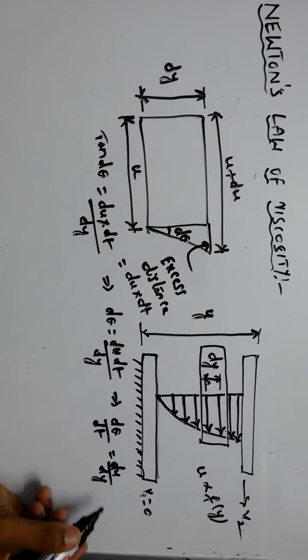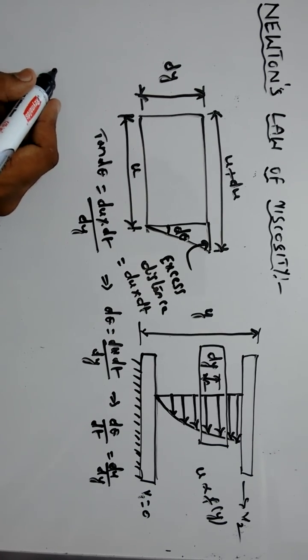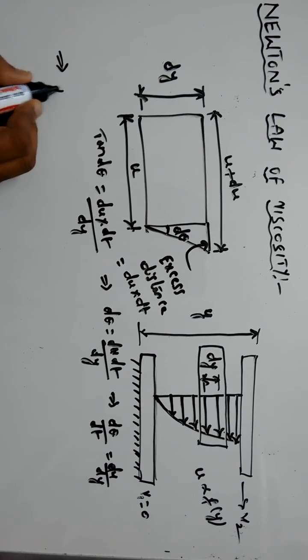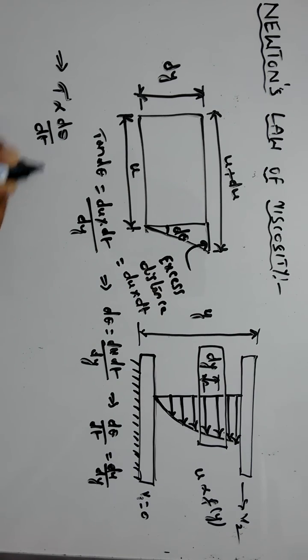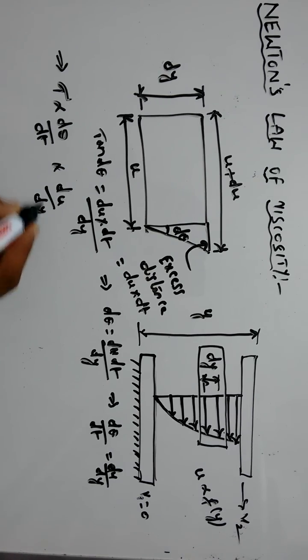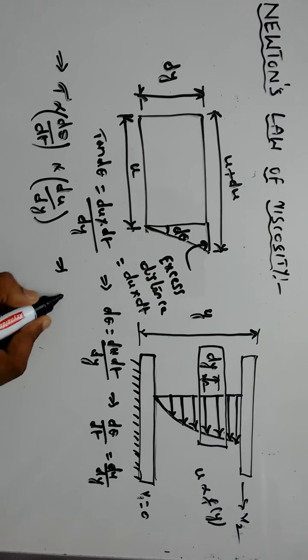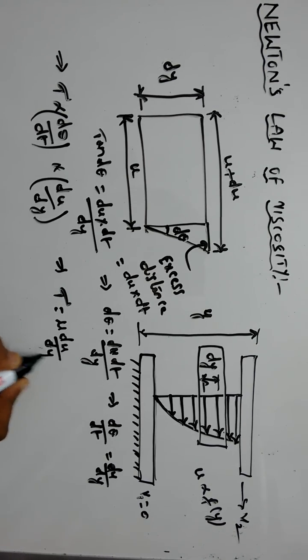From Newton's law of viscosity, shear stress is directly proportional to angular deformation or rate of shear strain d theta by dt, which is directly proportional to du by dy. Therefore, tau equals mu times du by dy.